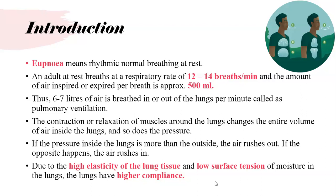So 6 to 7 liters of air is breathed in or out of the lungs per minute — you multiply 12 by 500 to get 6 liters of air taken in and out of the lungs per minute — and this process is called pulmonary ventilation.